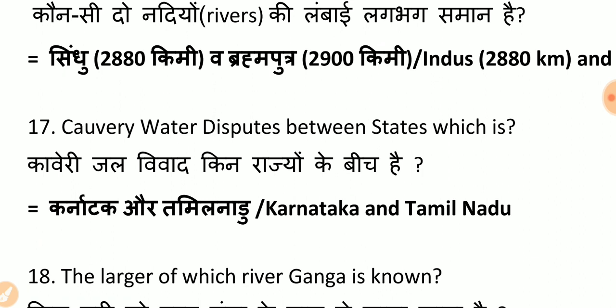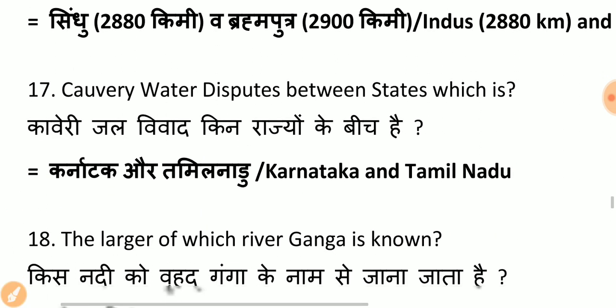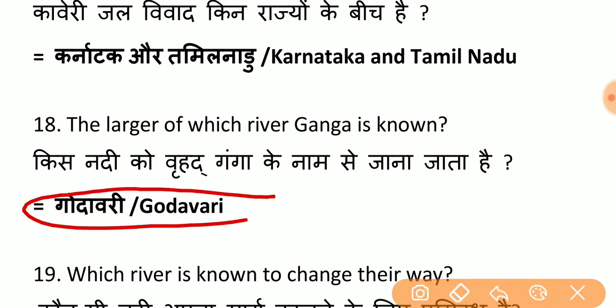Kaveri water dispute — between which states? A few years ago, the Kaveri water dispute became very intense and was heavily in the news. Such questions can be asked from you. Also: which river is known as the Vriddha Ganga (Grand Ganga)? Godavari is known as Vriddha Ganga — remember this.